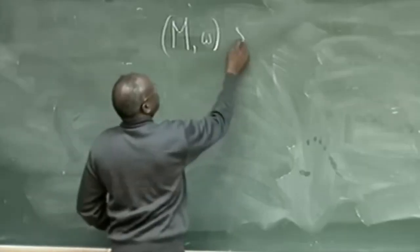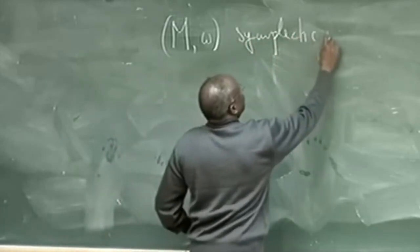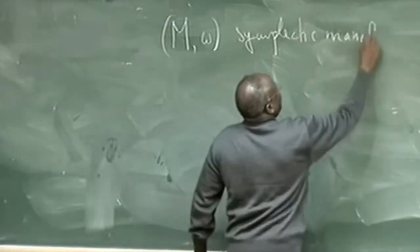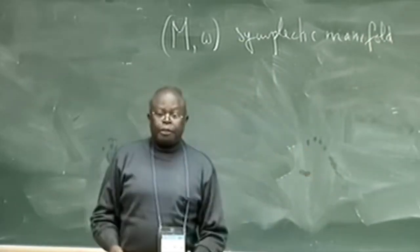Hello and welcome to this video on Augustine Banyaga, an accomplished mathematician and professor. Banyaga was born in Rwanda and later pursued his education in France, where he earned his doctorate in mathematics from the University of Paris.